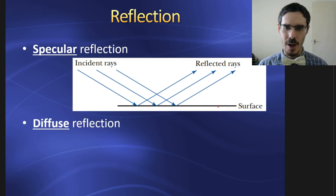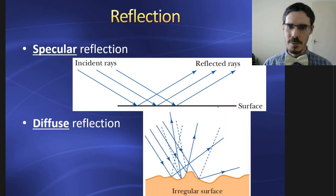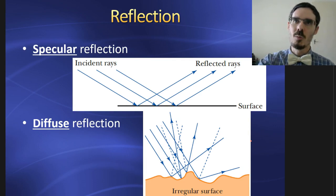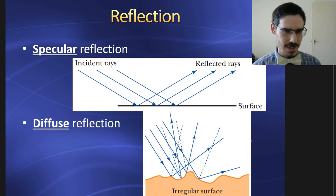But if the surface is rough, we get what's called a diffuse reflection. The light rays are being reflected at a whole lot of different angles, so you don't actually see a sharp image. For example, look at your wall or look at the desk.